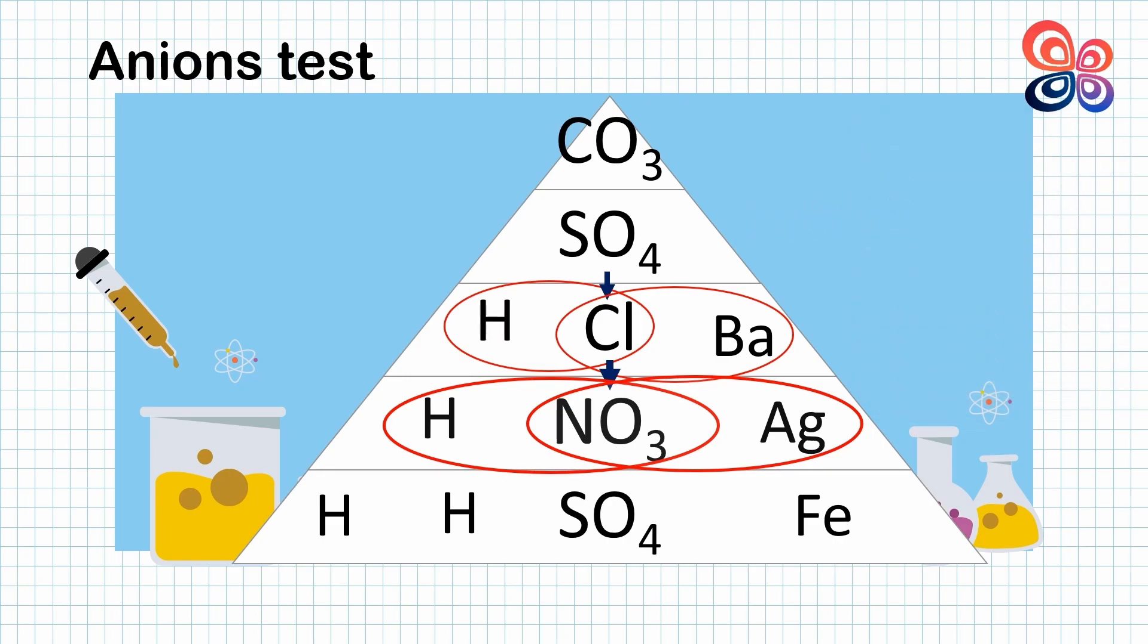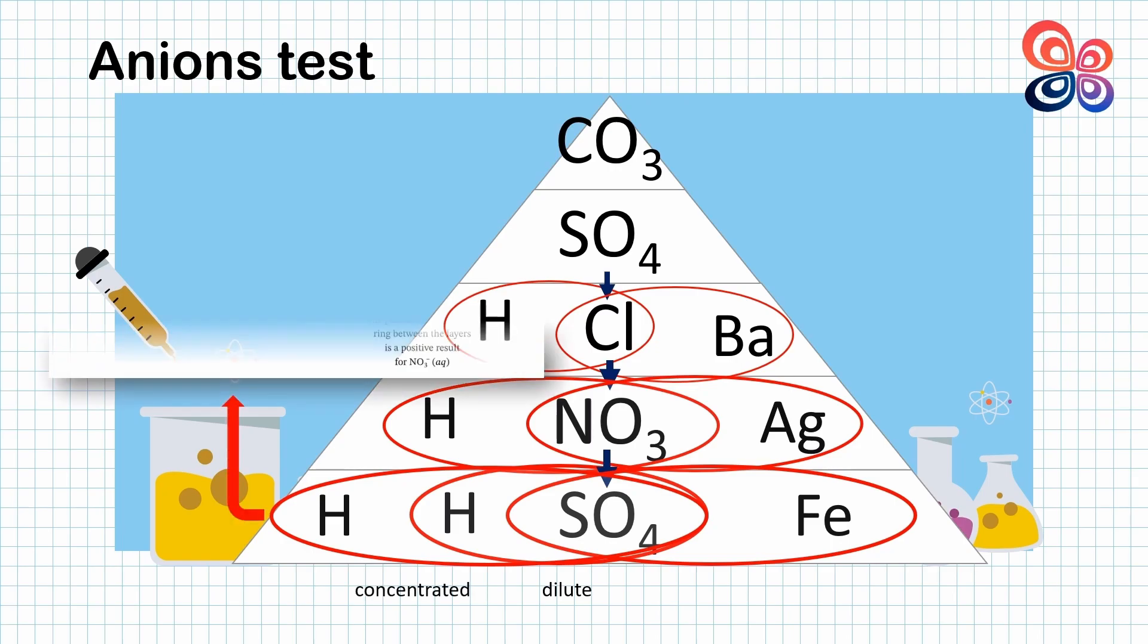The last test is nitrate ion. Same step as before, the sulfate ion is positioned below the nitrate. First is add the dilute sulfuric acid followed by iron sulfate. After that, carefully add the concentrated sulfuric acid to the solution.